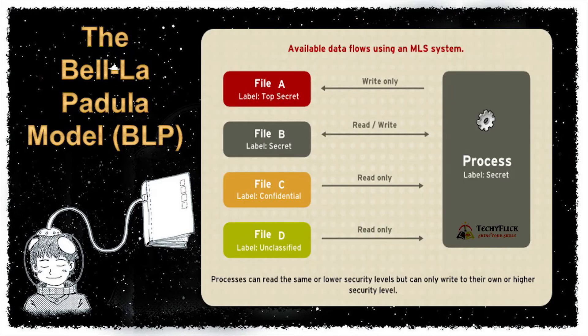In this security level concept, there is a model called the Bell-LaPadula model, or BLP. In the diagram, we have a process labeled as secret. There are four files: file D is unclassified data, that is confidential; file B is secret; and file A is top secret. For unclassified data, the process can read only. For confidential data, that is also read only.